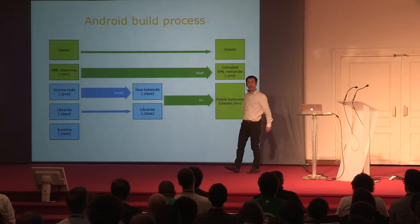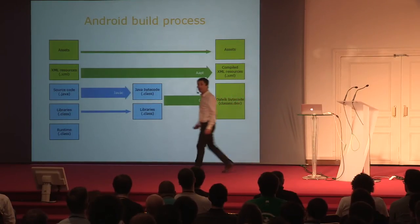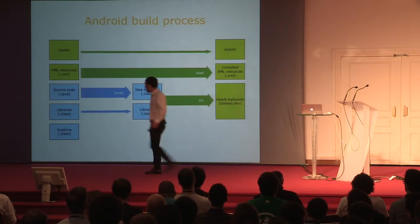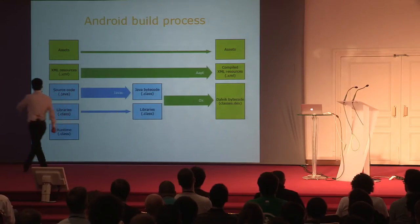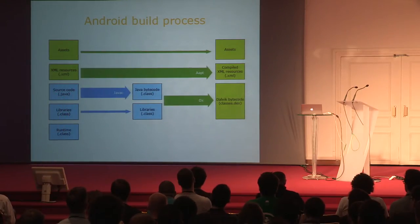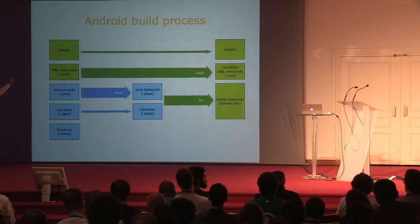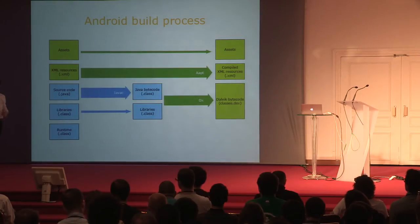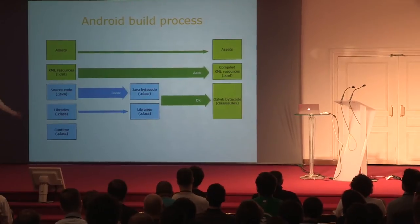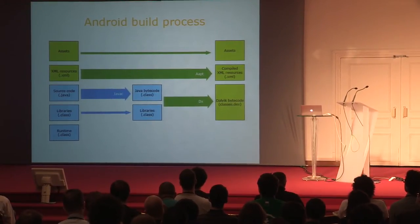Let's start with the Android build system—a diagram with a simplified presentation. On the left-hand side you have whatever goes into your application: you create assets, you create XML resource files, you write source code in Java most likely, you add some third-party libraries which are class files, and all of that is built on top of the Android runtime.